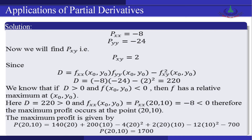Since D > 0 and P_xx = −8 < 0, f has a relative maximum at (x₀, y₀). In our case, D = 188 > 0 and P_xx at (20, 10) = −8 < 0. Therefore the maximum profit occurs at the point (20, 10). We can also calculate the maximum profit: P(20, 10) = 1700.